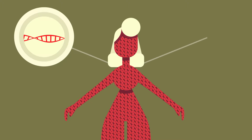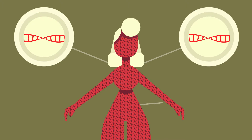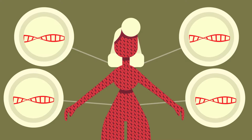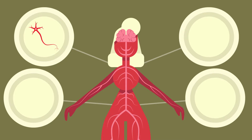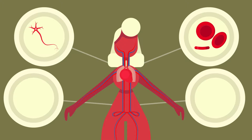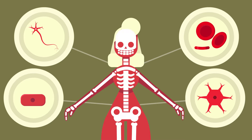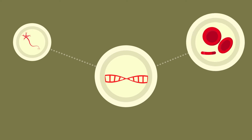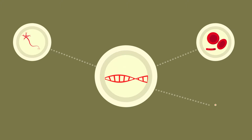Every single cell in your body contains the same DNA. However, not all of your cells are the same. You have nerve cells, blood cells, skin cells, bone cells and many more different types that all have a slightly different structure so they can carry out their function. So how can the same DNA create a whole range of different cells?